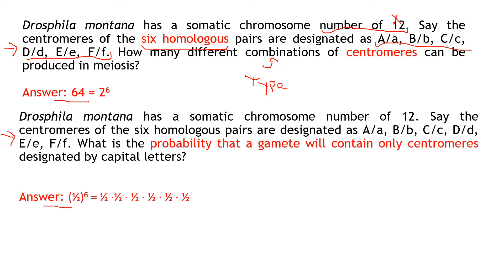So, how many types of centromeres can be produced in meiosis? The word 'centromere' can be misleading. A centromere is the structure between the two arms of a chromosome. However, here it is being used similarly to an allele — a type of a gene located on a chromosome. For counting purposes, they work the same way: you will have one dominant type or one recessive type.